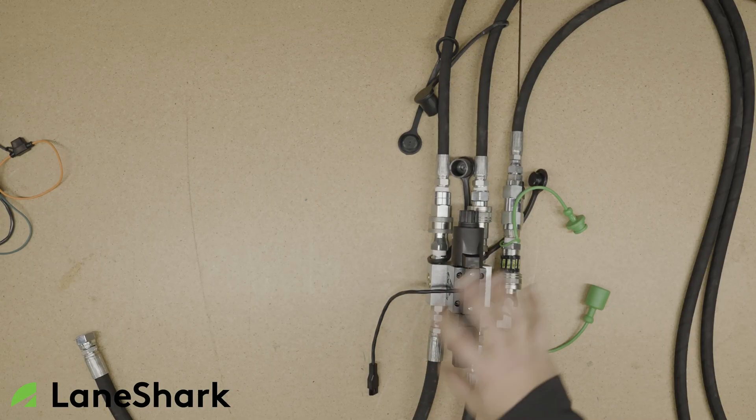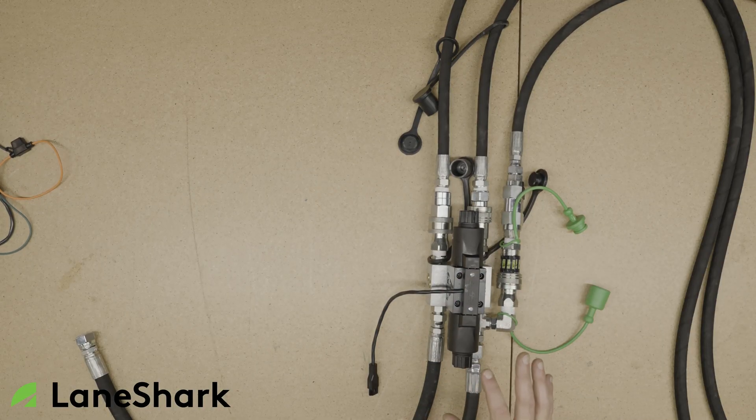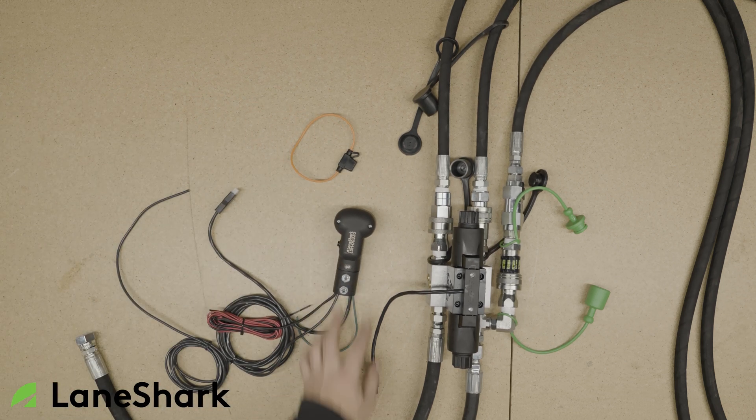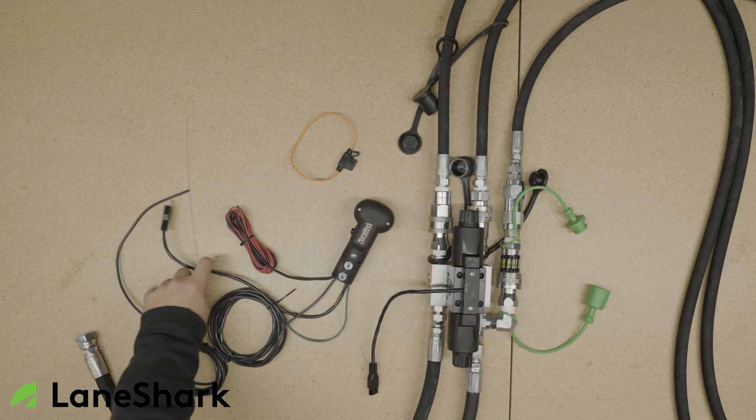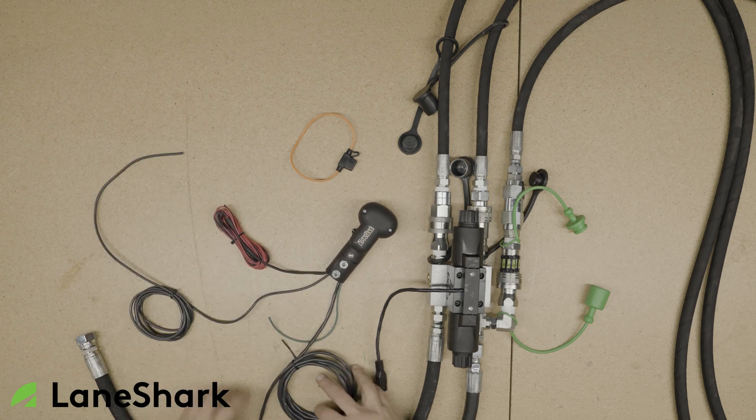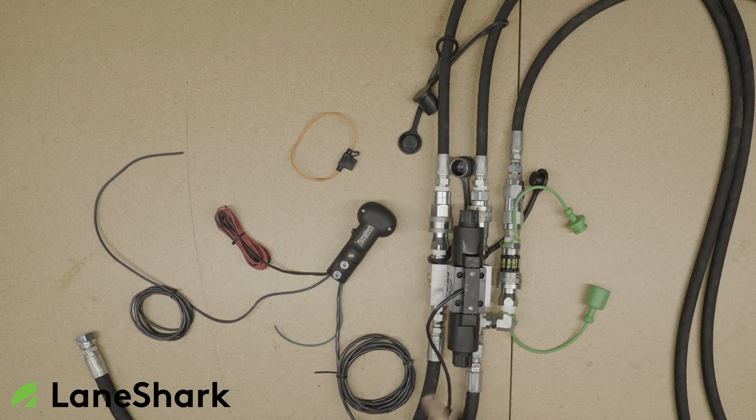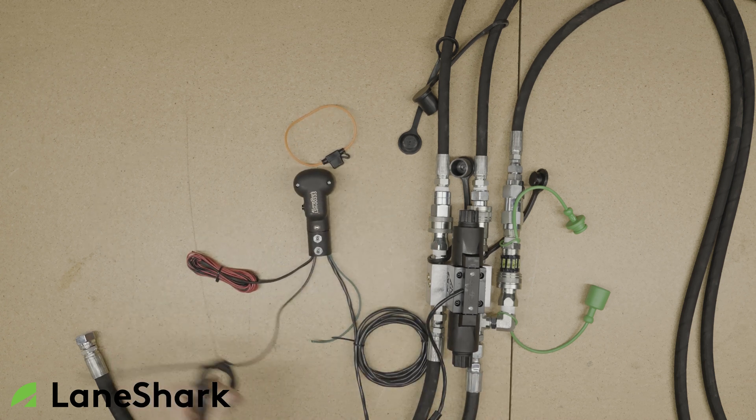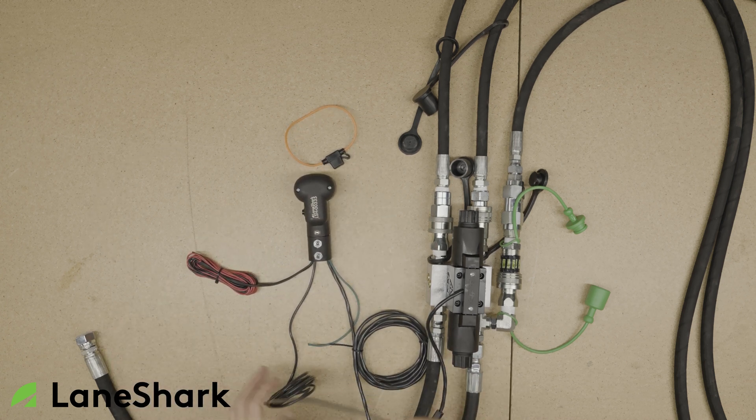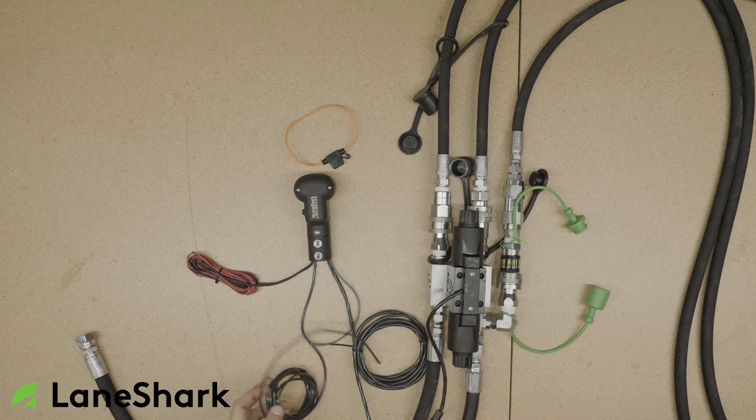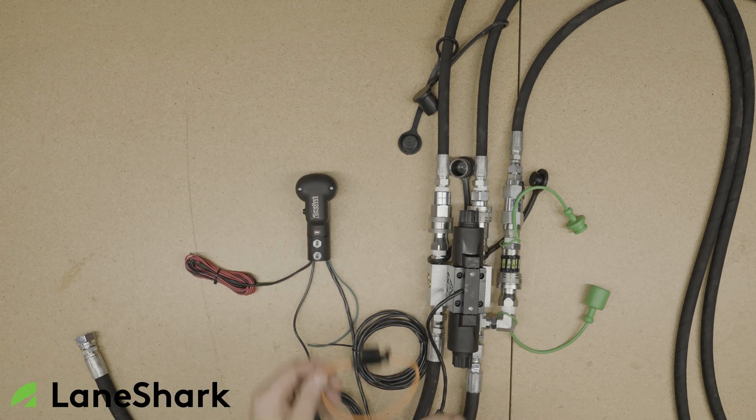So once we have all the hoses and fittings properly secured and ran, we're going to come back to our wiring. So we're going to bring our handle over, and obviously our plug just plugs right in. Can't go wrong with that one. And then we have our main power wire. So if you cut the wire from the old module, you can splice this back into it, or you need to run this directly to the battery, and you have your fuse.